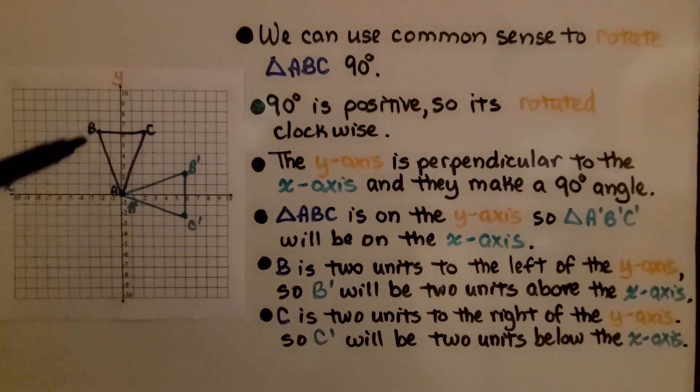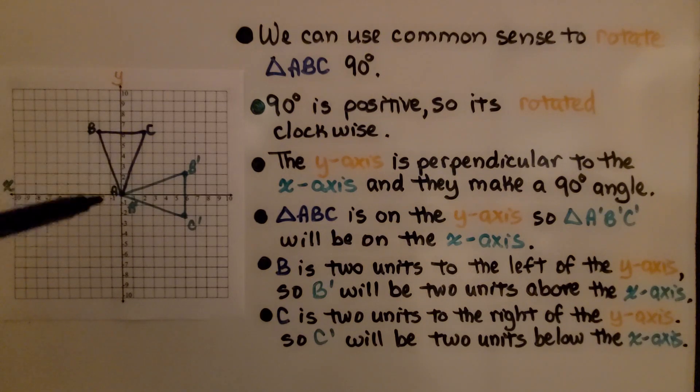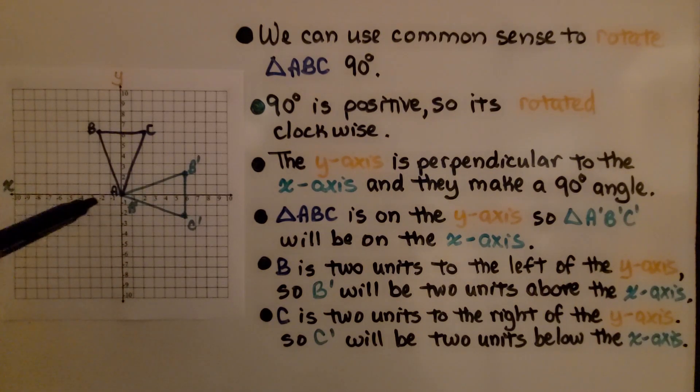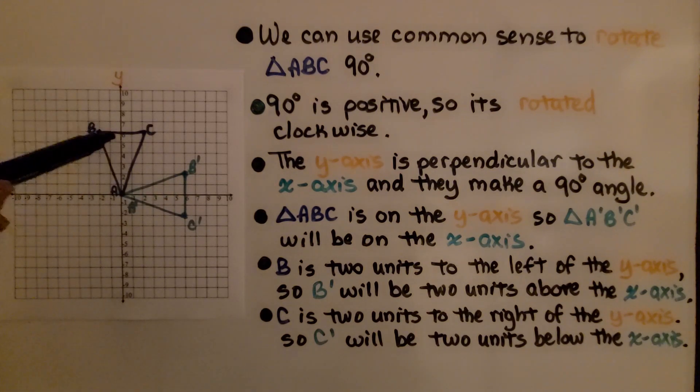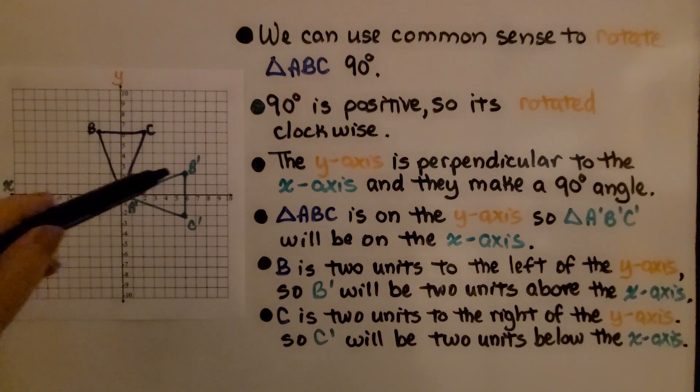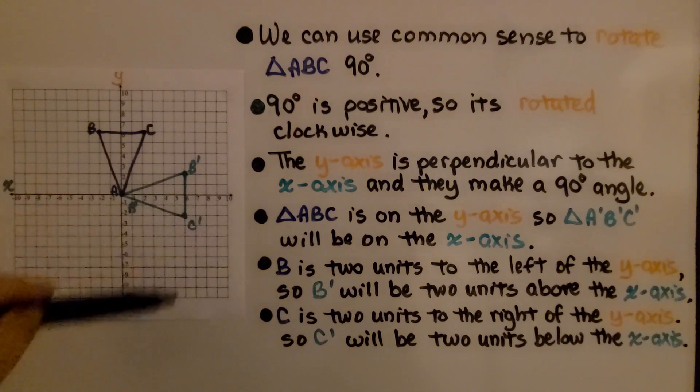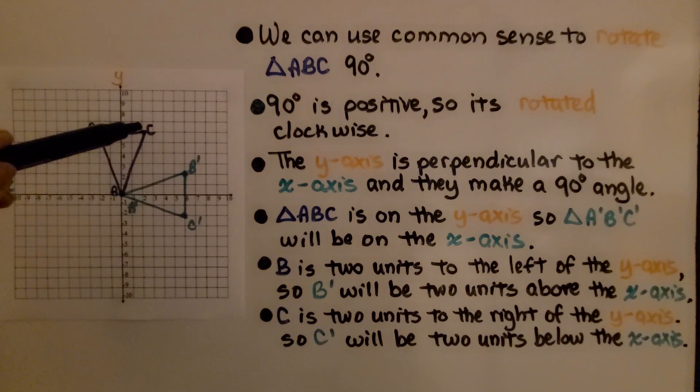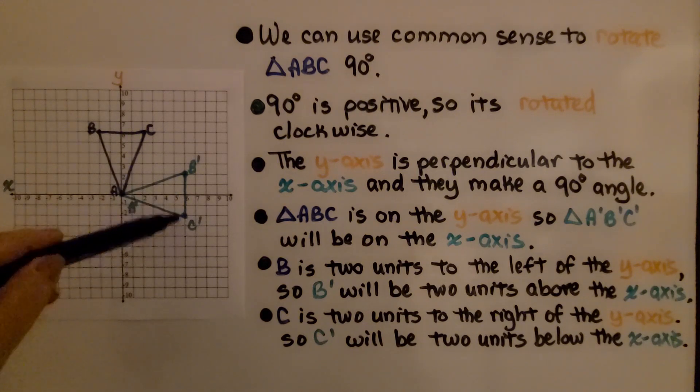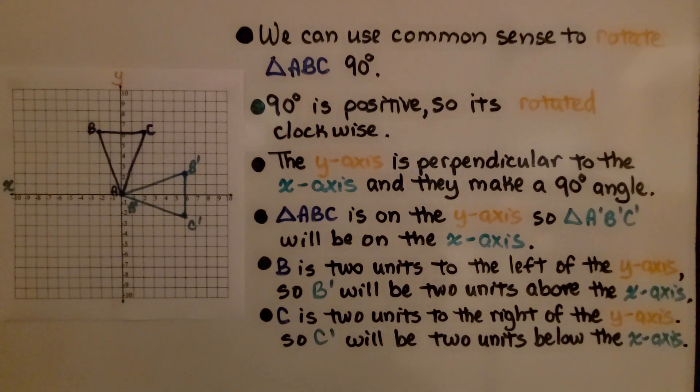Triangle ABC is on the y-axis, so triangle A prime, B prime, C prime will be on the x-axis. B is two units to the left of the y-axis, so B prime will be two units above the x-axis. C is two units to the right of the y-axis, so C prime will be two units below the x-axis.